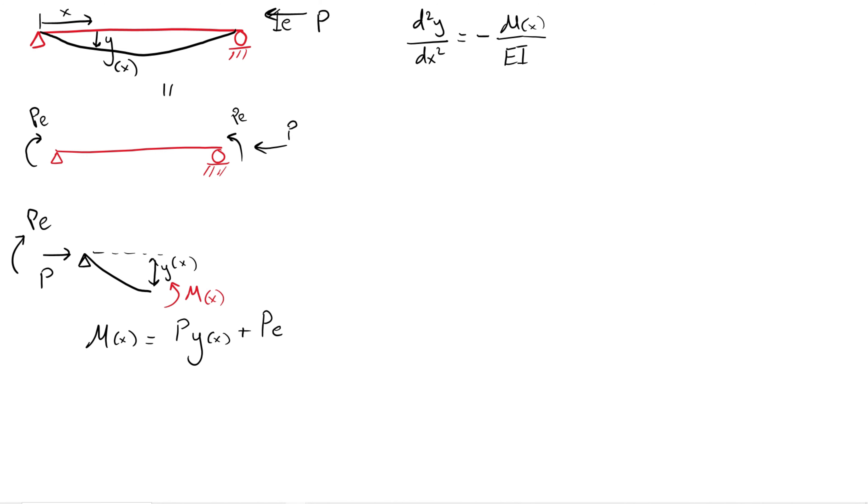An eccentrically axially loaded beam can also be represented by a beam with a non-eccentric axial loading and an applied external moment. This moment is equivalent to the eccentricity E multiplied by the axial load P. Now by taking a cut again through the beam and equating the moments, we obtain the bending moment as follows.